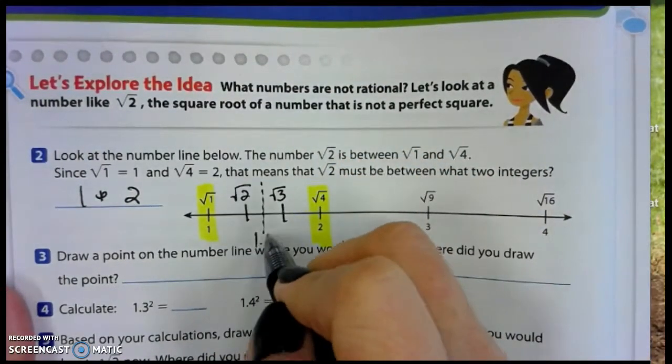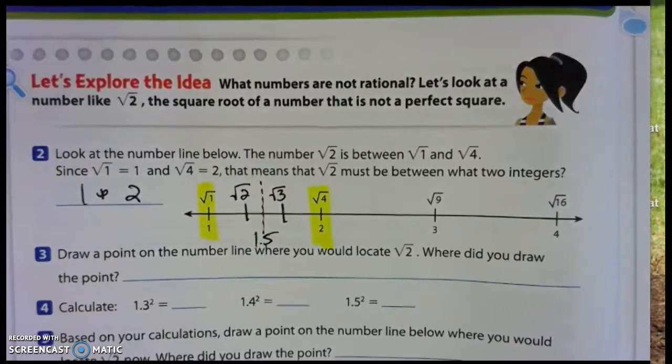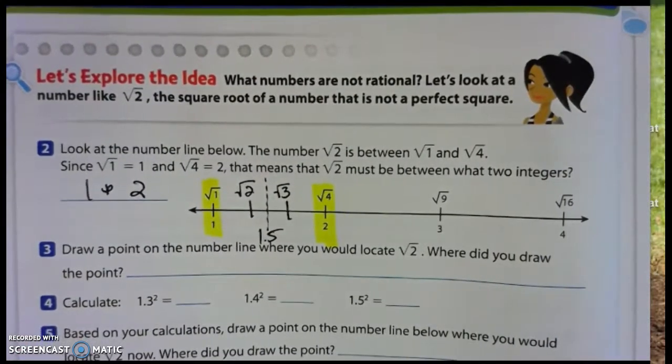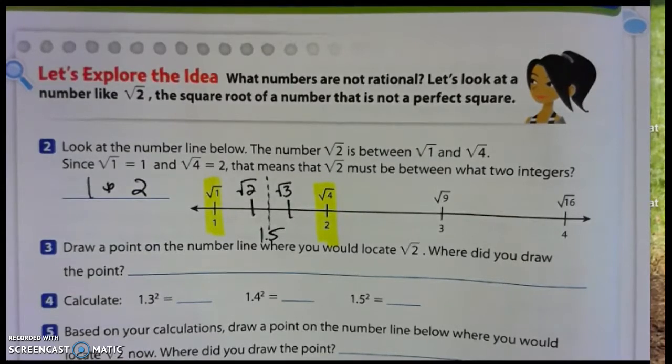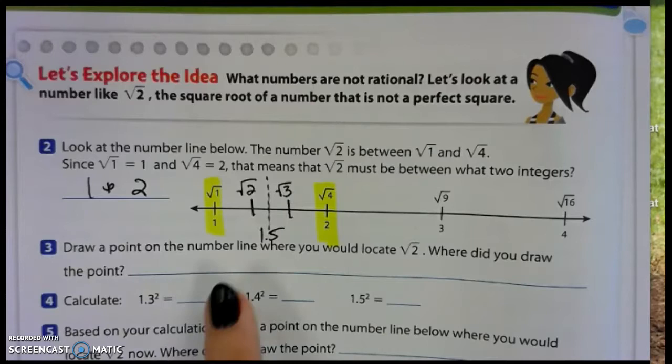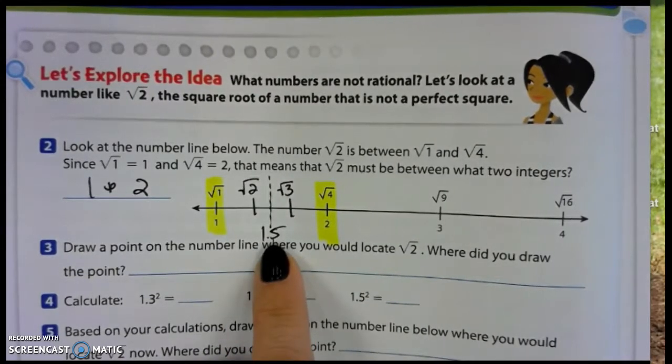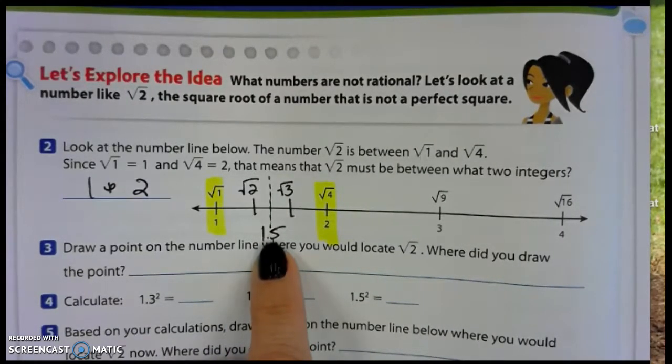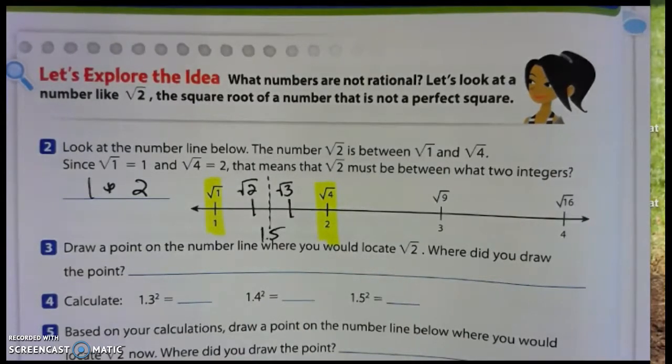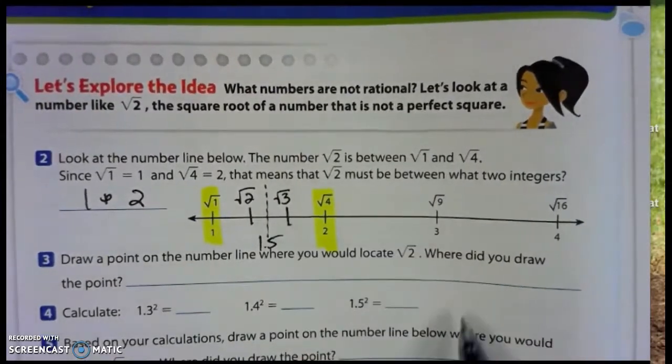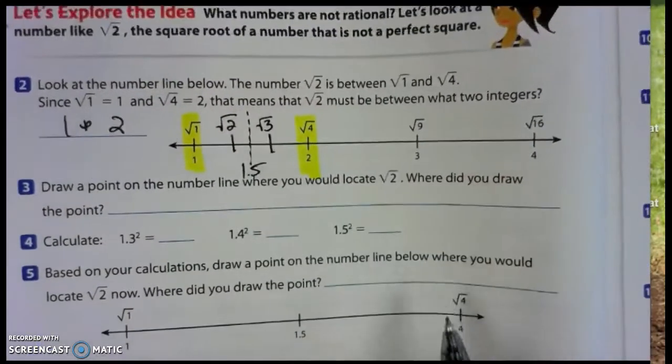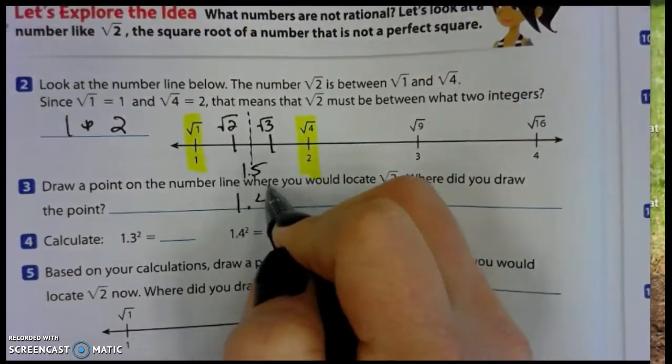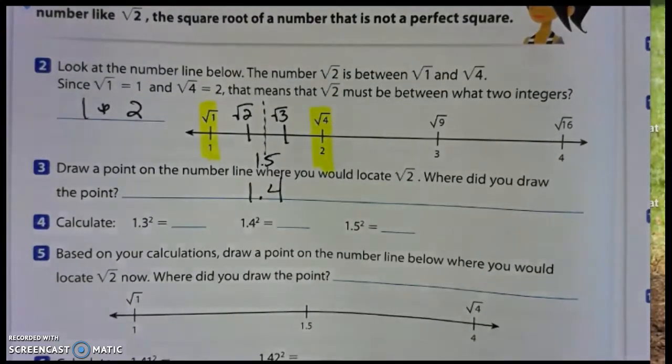Notice neither of them are at the halfway point. This would be 1.5. So would I want to estimate the square root of 2 to be 1.5? I can see from my number line that it is less than 1.5, so when I estimate, I'm not going to use 1.5. I want to go just a little bit below that. Here's the point that they draw. I am going to estimate it at 1.4.